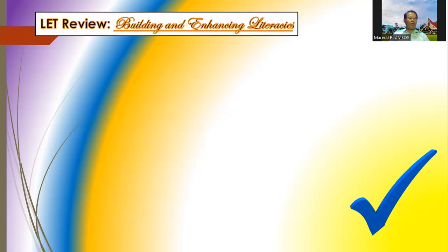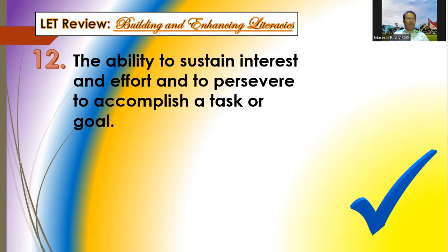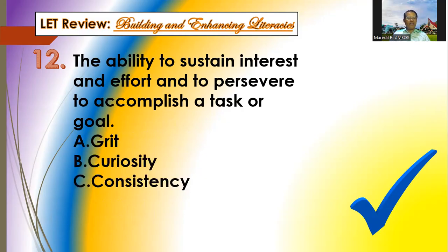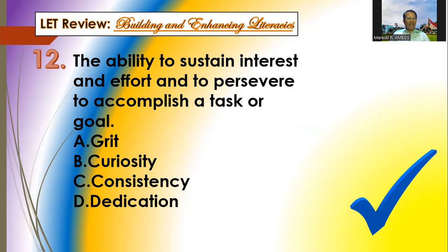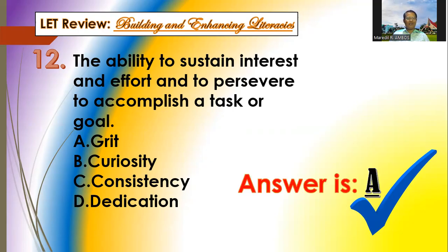Question number twelve: the ability to sustain interest and effort and to persevere to accomplish a task or goal is known as: A is grit, B is curiosity, C is consistency, and D is dedication. The answer is letter A — it's grit.